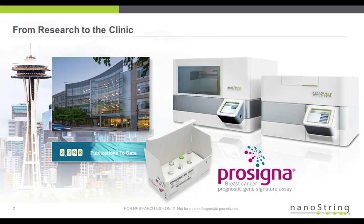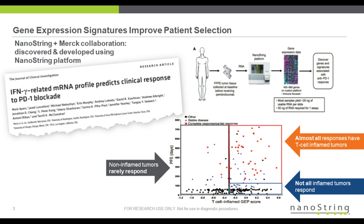Thanks for the introduction. Nanostring was founded in 2003, headquartered in Seattle, and focuses on getting as much information out of as little tissue as possible. In addition to research products, we have two platforms, including an IVD diagnostic test for breast cancer running on our N-Counter platform — the ProSigma test. Nanostring has a long history of multiplexed gene expression assays. In this paper by Merck, they performed gene expression analysis of FFPE samples to identify a signature that can predict response to anti-PD-1 blockade — an 18-gene signature called the GEP, which we refer to as the tumor inflammation signature, or TIS.